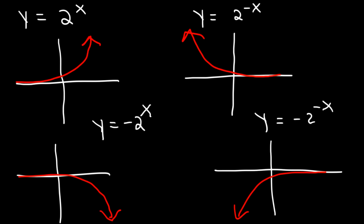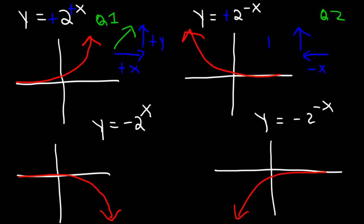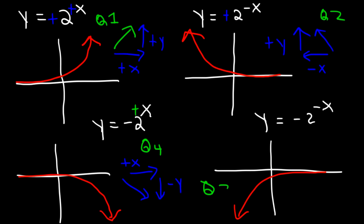Here's a way to remember it. Positive x travels towards the right, positive y travels upward — so that graph goes towards quadrant one. For quadrant two: x is negative (towards the left) and y is positive (going up). For quadrant four: x is positive (right) and y is negative (down). For quadrant three: both x and y are negative — left and down — so we're heading towards quadrant three.